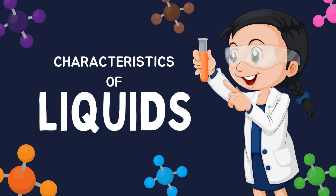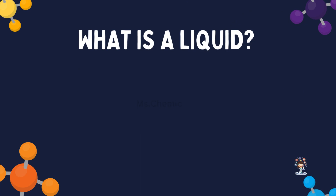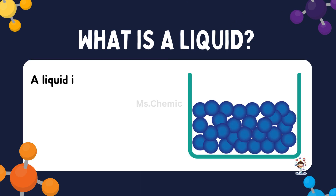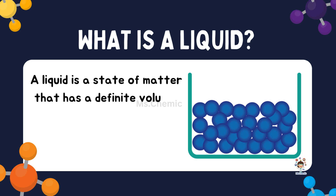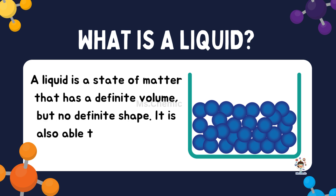Characteristics of liquids. What is a liquid? A liquid is a state of matter that has a definite volume but no definite shape. It is also able to flow and take the shape of its container.